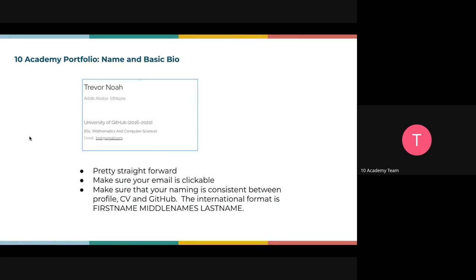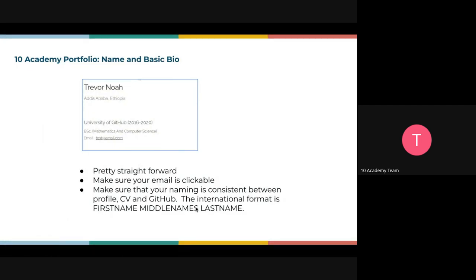We are done with the video section. Now let's move on to the name and basic information section. This is the box for your basic information on your 10 Academy profile. Ensure everything is straightforward, your email is clickable, and your naming is consistent across all profiles. If you have three names, put them all there; if you have two names, please put them there as they appear on all other platforms.